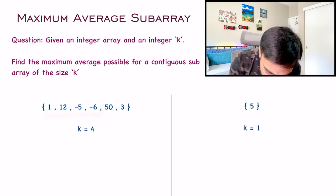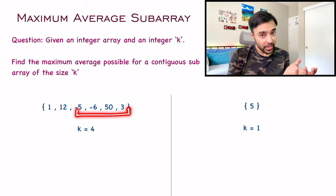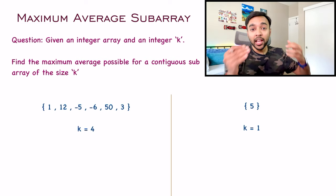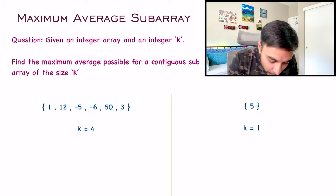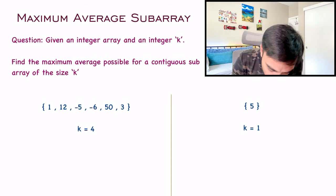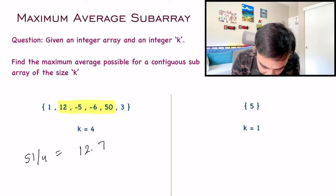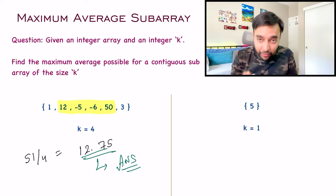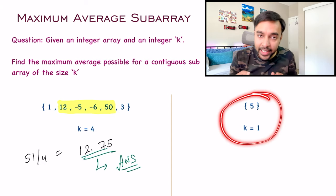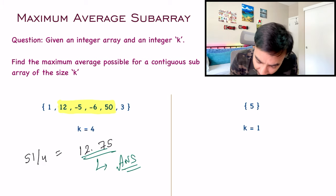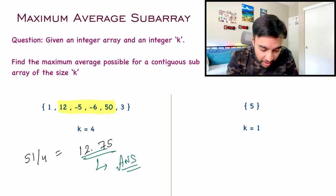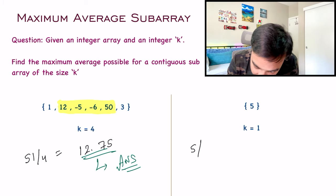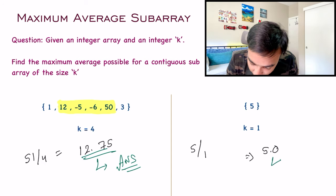One subarray can look like this, another subarray can look like this, and yet another like this. Out of all these different possible subarrays, you have to find which one has the maximum average value and return it. For this particular problem, the maximum average comes from a subarray with a total of 51, giving an average of 12.75 — that is your answer. For the second test case with one element and k equal to 1, the answer is 5.0.